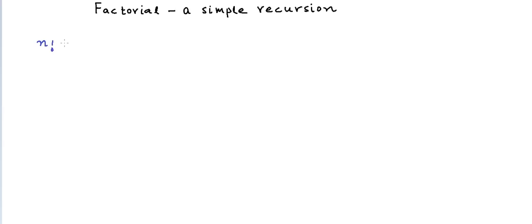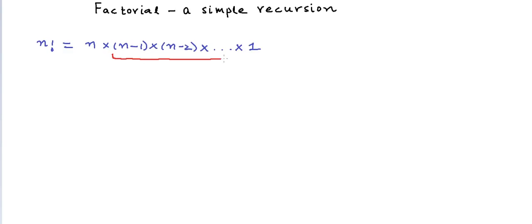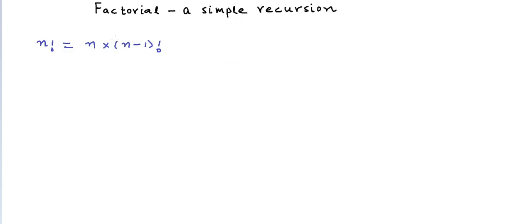The prerequisite for this lesson is that you should know about functions in programming. As we know in mathematics, factorial of n is defined as the product of all the integers from 1 to n. So n factorial is written as n into n-1 into n-2, and we go on multiplying with all the integers till 1. We also know that n-1 into n-2 all the way till 1 is nothing but (n-1) factorial. So we also say that n factorial is actually n into (n-1) factorial, and this is true for all n greater than 0.